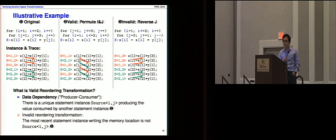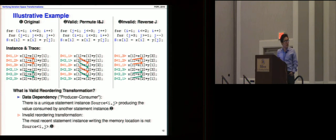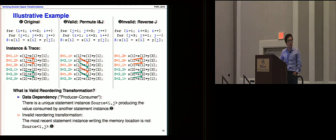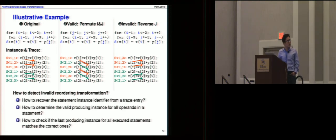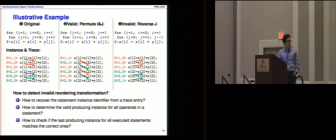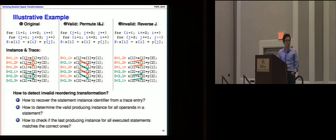Now let's look at reversing the j-loop of the original code, which is an invalid reordering transformation. The key point of a valid iteration reordering transformation is to preserve dependencies. For example, statement instance s1-1 is the last producer for consumer s1-2 in the original. After permuting i and j, s1-1 is still the last producer of s1-2. But in the invalid reordering, s1-1 is no longer the producer of s1-2 — instead s1-3 becomes the producer — so this is a violation.